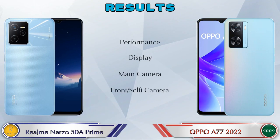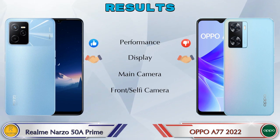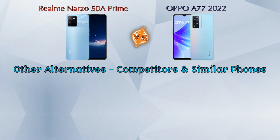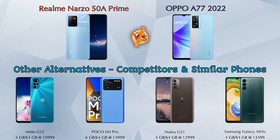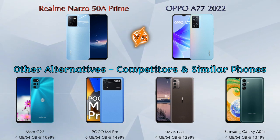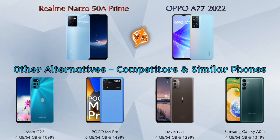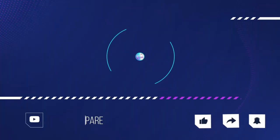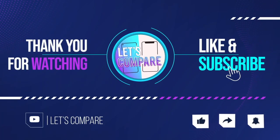Finally, the results: in performance the 50A Prime is ahead, in display both phones are the same, in main camera both are the same, and in front selfie camera both are the same. Other competitors at the same price include the Moto G22 4G, Poco M4 Pro, Nokia G21, and Samsung Galaxy A04s. Details about all competitor phones are available in the description. If you like our video, please like and subscribe. Thanks for watching.